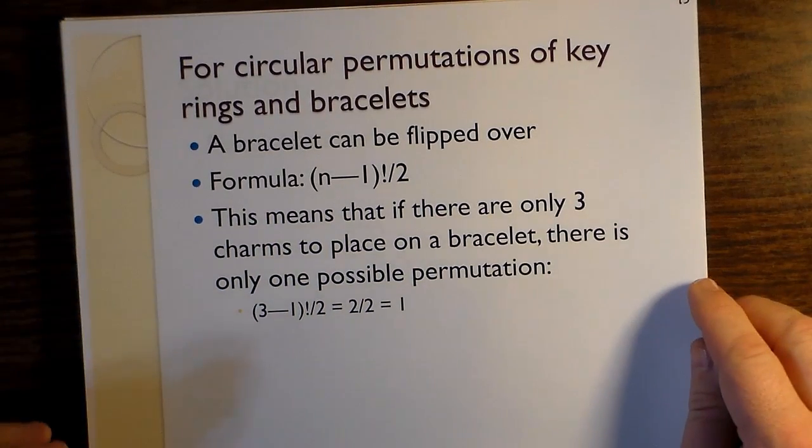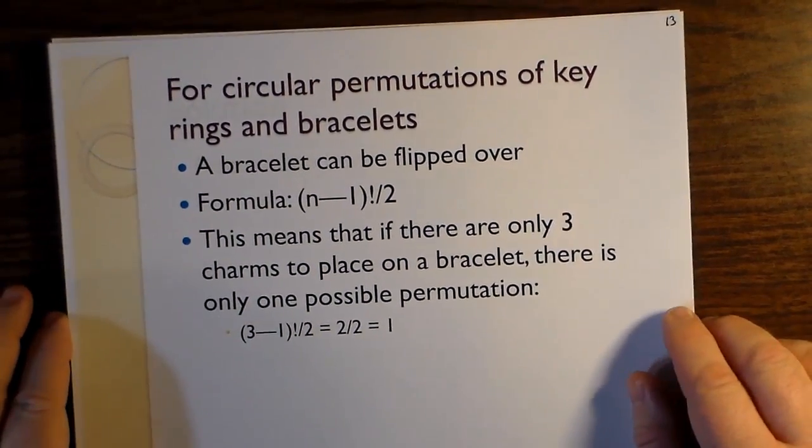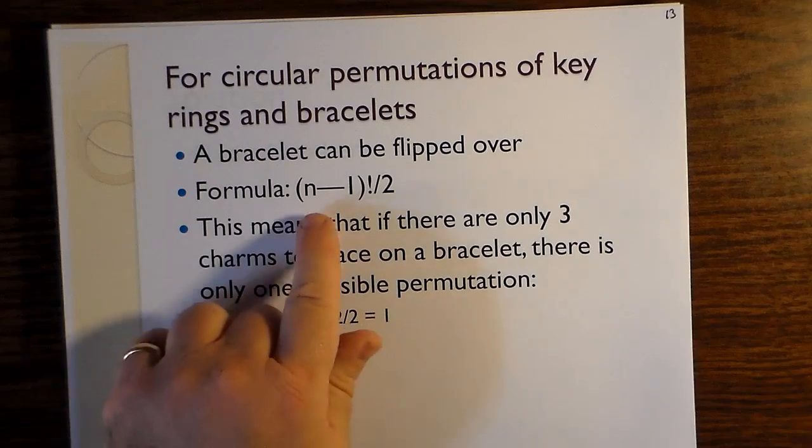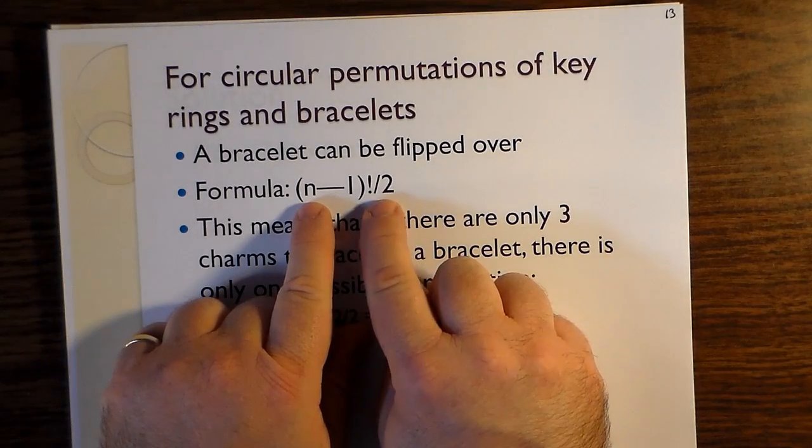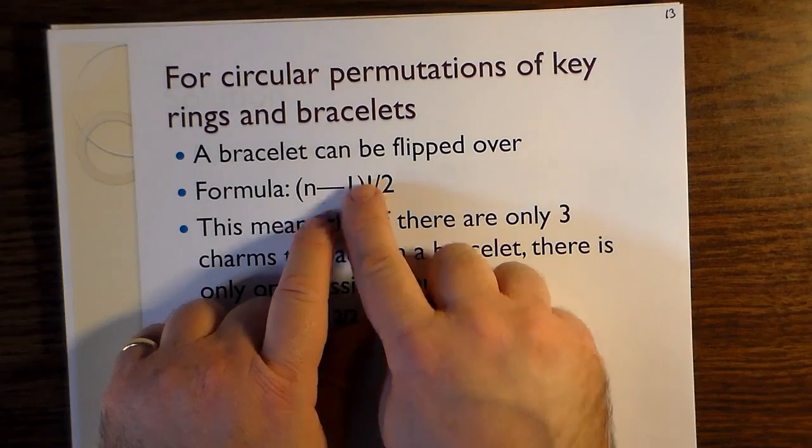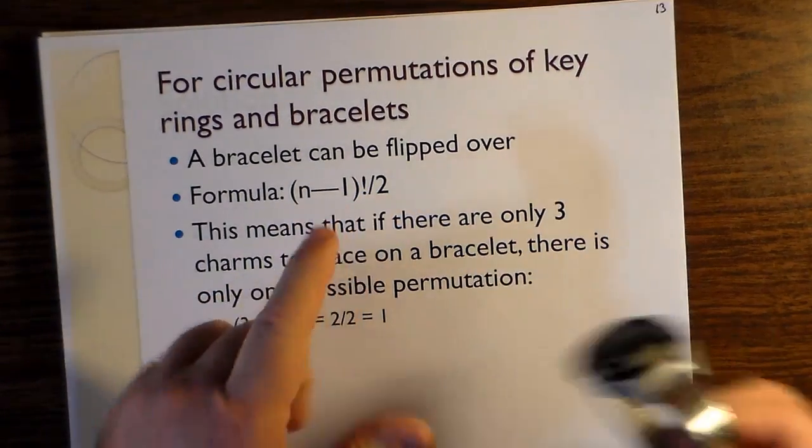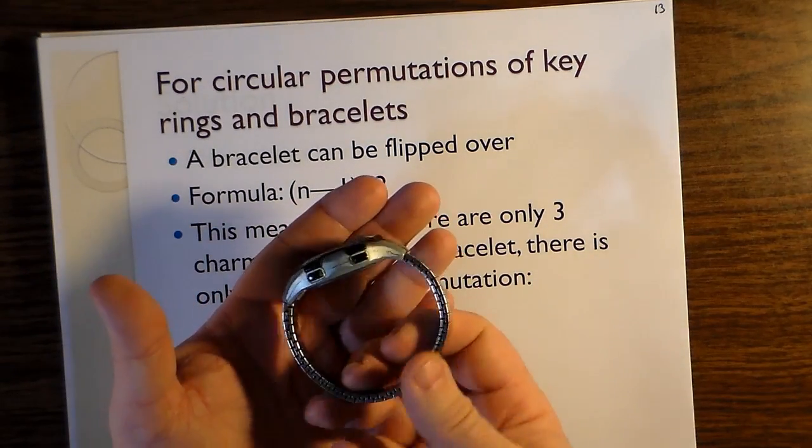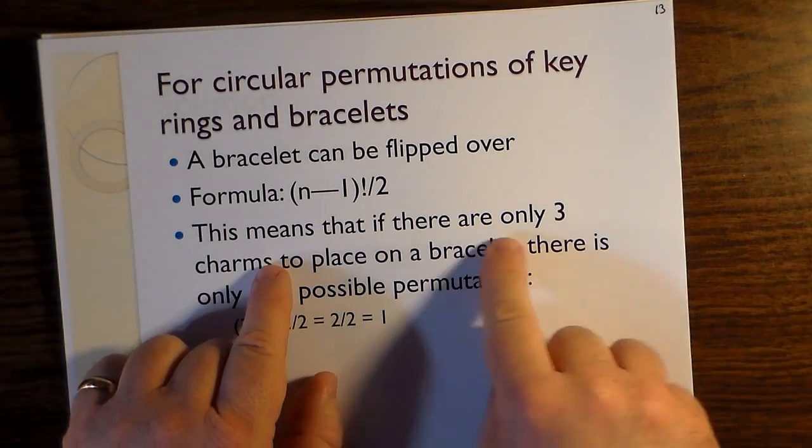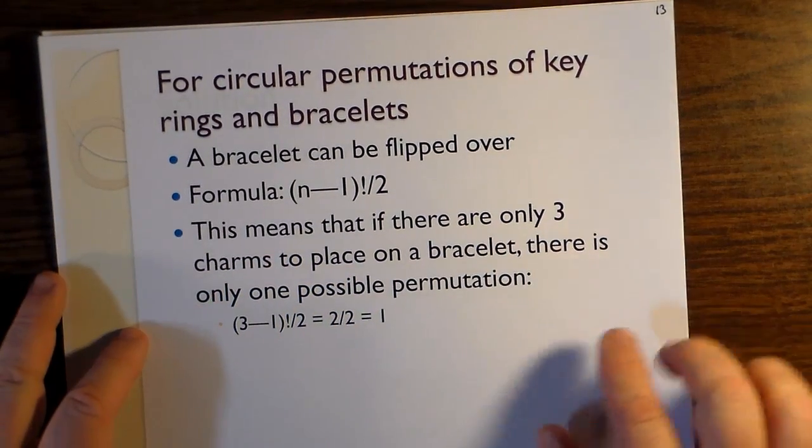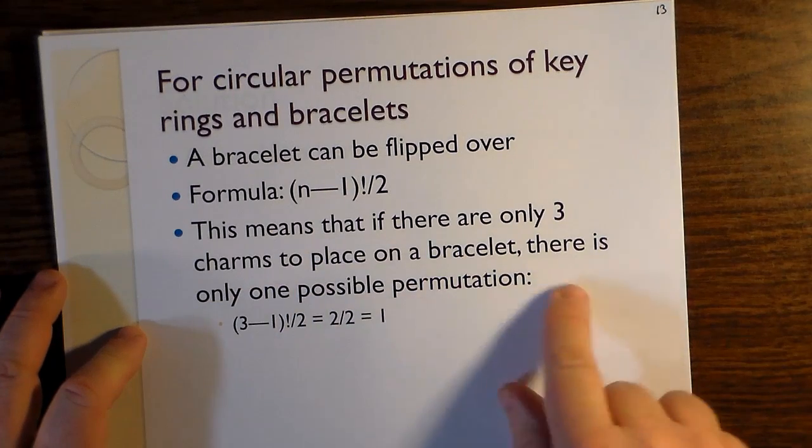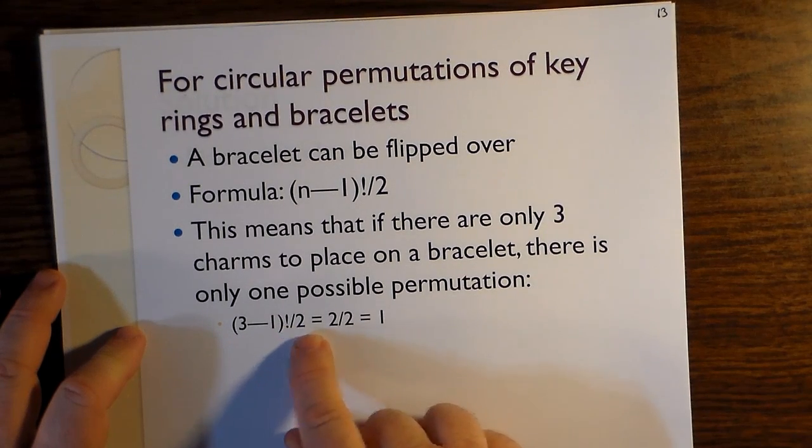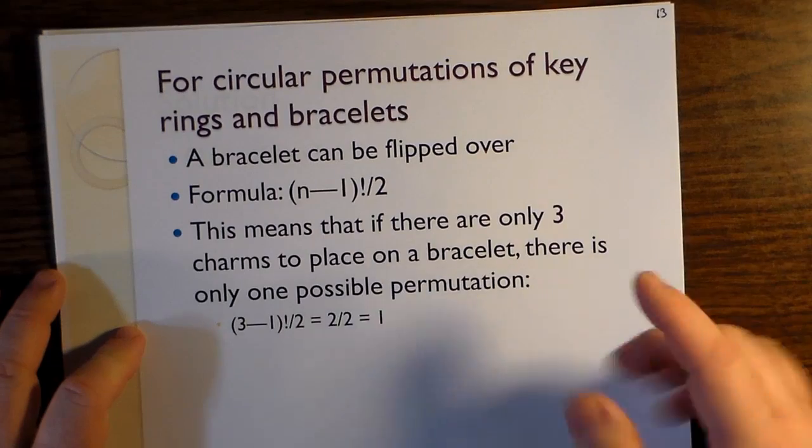So as to the matter of circular permutations of key rings and bracelets, a bracelet can be flipped over. Its formula, then, if it's n minus one for the circle, we have to divide by two because of the ability to flip over a bracelet and treat this as the same circle as we had before. This means that there are only three charms to place on a bracelet. That if there are only three charms to place on the bracelet, there is only one possible permutation. In other words, three minus one factorial, which is two, divided by two, which is just one.